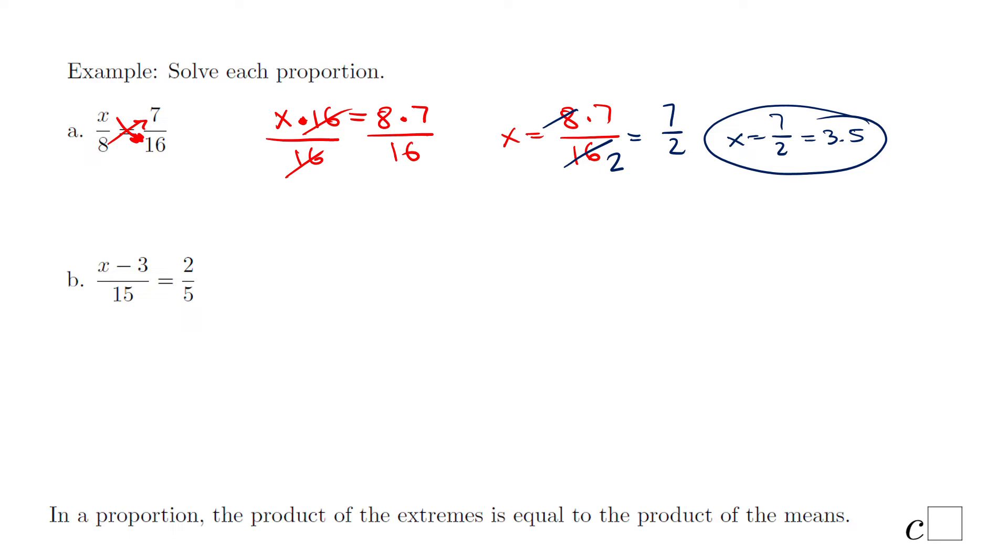Part B is a very similar problem. The only difference, we have x minus 3 instead of x. But the idea is the same. We're going to have the product of the extremes: x minus 3 times 5 equals the product of the means, 15 times 2. One way to do it is distributive property. We have 5 times x minus 5 times 3, that's 15, and 15 times 2 is 30.